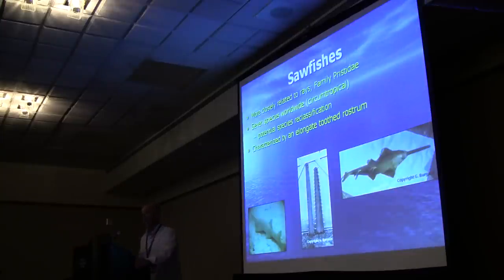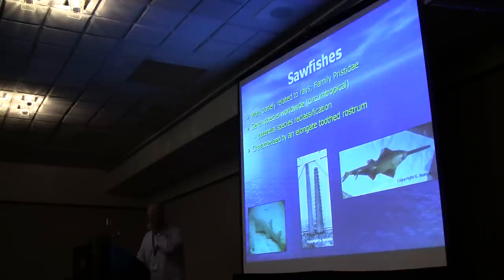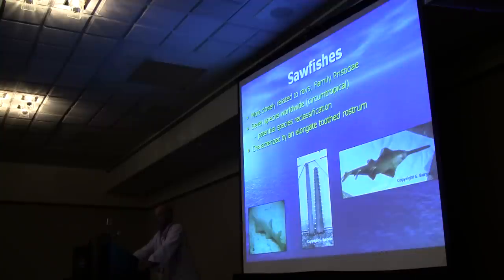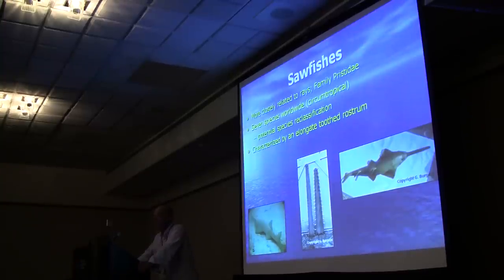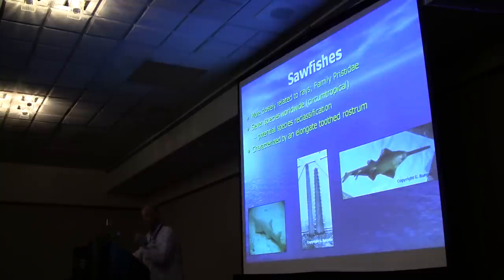First, and my apologies to anyone in the audience who already knows this, but I just want to give you an idea of what a sawfish is, because we've been talking about sharks. Sawfish are actually more closely related to rays. They're in their own family. There are currently seven species worldwide, but there is some potential species reclassification going on. The species is largely found circumtropical, and the big thing about sawfish, besides it being a ray-like animal, is it's characterized by this large rostrum, which you can see here. The rostrum is one of the major diagnostic characteristics that we use to differentiate species.